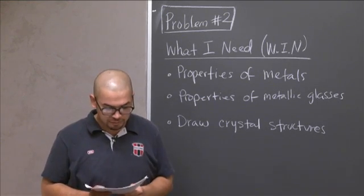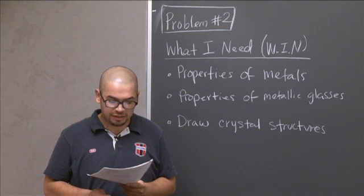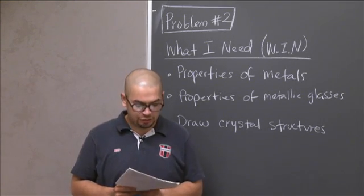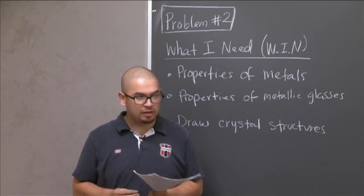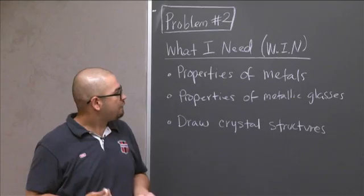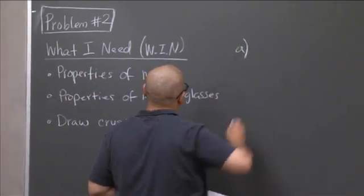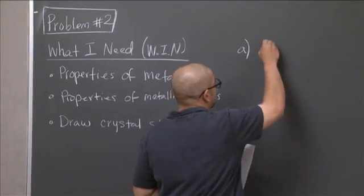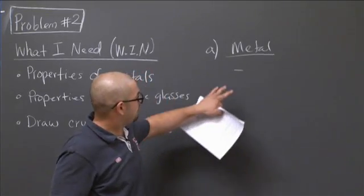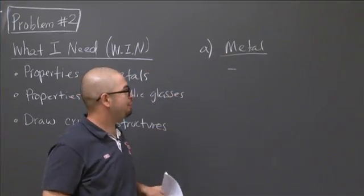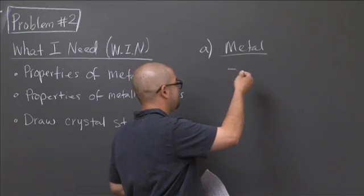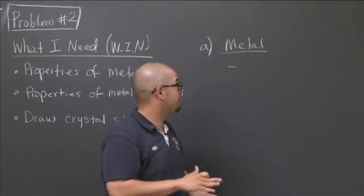The problem reads as follows: For a given alloy composition, explain why the yield strength of the amorphous form, the metallic glass, is greater than that of the crystalline form. In order to answer this question, you want to start thinking about the mechanical properties that these two materials have. If I look at a metal, I know that the way a metal deforms before it reaches plastic deformation, it deforms via planes sliding past one another. So it's known as slip.